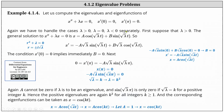In this lesson, we'll compute the eigenvalues and eigenfunctions of x double prime plus lambda x equals 0, with x prime of 0 equals 0 and x prime of pi equals 0. We need to handle the cases lambda greater than 0, lambda equals 0, and lambda less than 0 separately.